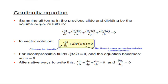That is the continuity equation. Summing up all the terms and dividing by the whole volume δx δy δz, we get: ∂ρ/∂t + ∂(ρu)/∂x + ∂(ρv)/∂y + ∂(ρw)/∂z = 0. In vector notation, this is ∂ρ/∂t + ∇·(ρu) = 0, where div u means ∂u/∂x + ∂v/∂y + ∂w/∂z. For incompressible fluid, ∂ρ/∂t = 0, so the equation becomes div u = 0, or ∂u/∂x + ∂v/∂y + ∂w/∂z = 0.